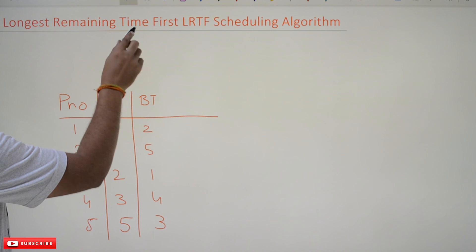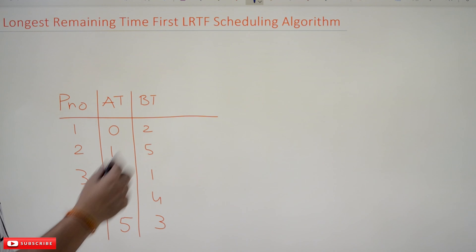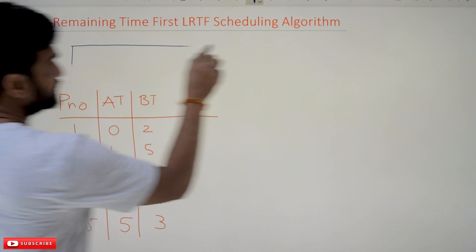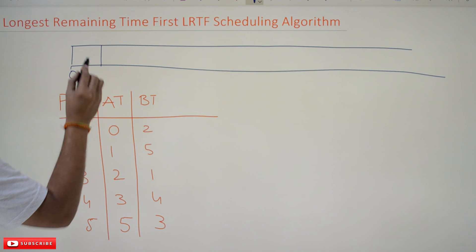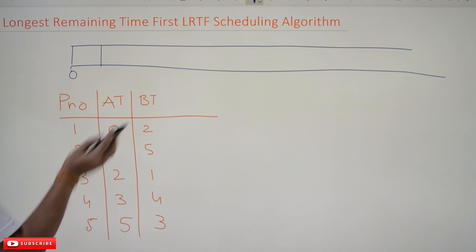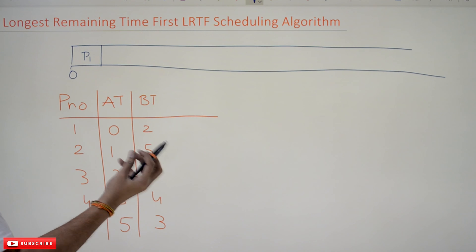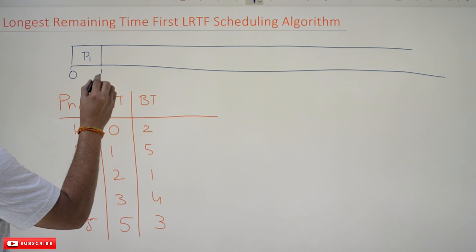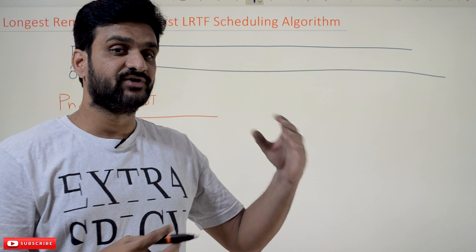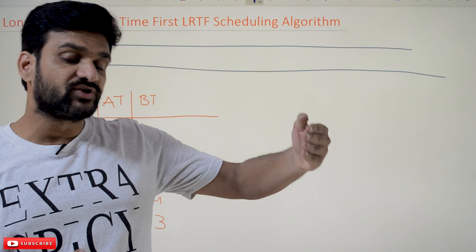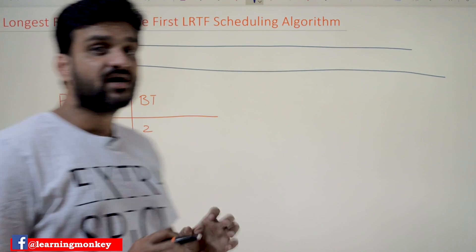Let's understand LRTF using an example — the same example used in our previous videos. We are going to start the Gantt chart from time zero. At time zero, the only process that has arrived is P1, so we take P1 since we have no other options. It will run for one unit of time, because we have assumed a time quantum of one unit. For every one unit of time, the running process is moved to the ready state and a ready state process is moved to the running state.